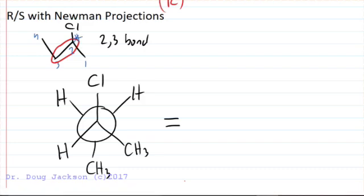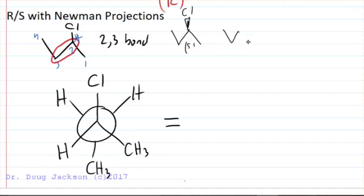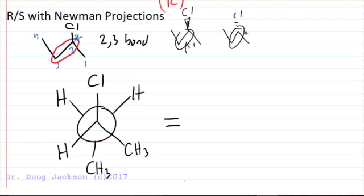The planar structure that we draw with the skeletal doesn't actually exist. What does exist is either an S, as we have here, or an R configuration about that 2-3 bond. We've got to figure out which is which, and looking at this Newman, for novices just getting started with this, is not exactly obvious for most people.